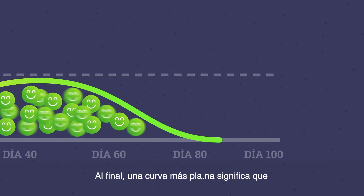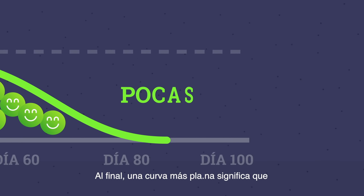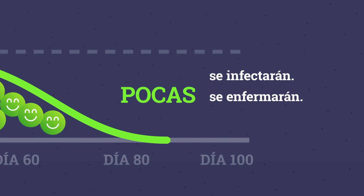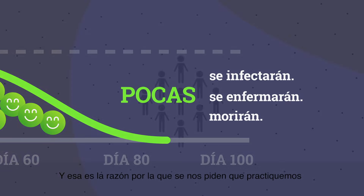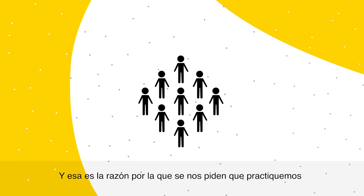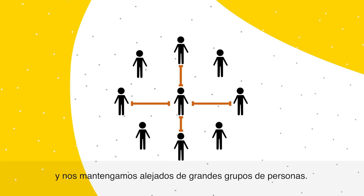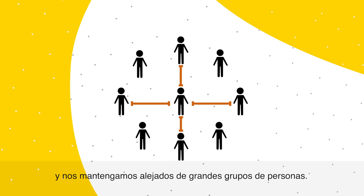In the end, a flatter curve means that fewer people will get infected, fewer get sick, and fewer will die. And that's the reason we're being asked to practice social distancing and stay away from large groups of people.